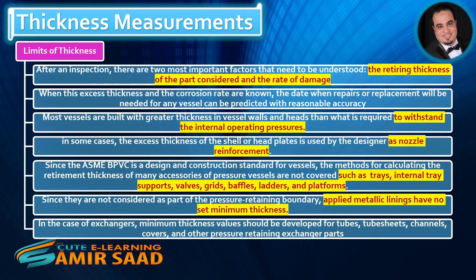Most vessels are built with greater thickness in vessel walls and heads than what is required to withstand the internal operating pressures. In some cases, the excess thickness of the shell or head plates is used by the designer as nozzle reinforcement. Since the ASME BPVC is a design and construction standard for vessels, the methods for calculating the retirement thickness of many accessories — such as trays, internal tray supports, valves, grids, baffles, and platforms — are not covered, as they are not considered part of the pressure-retaining boundary. Applied metallic linings have no set minimum thickness.